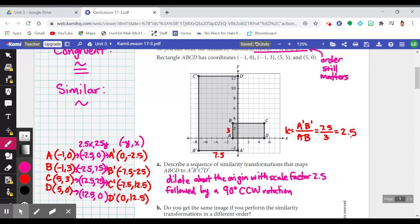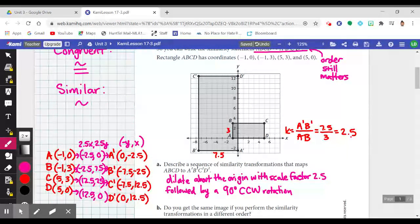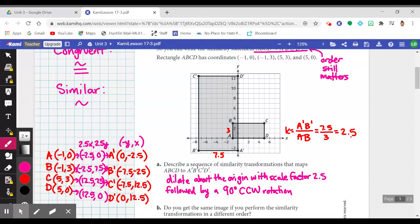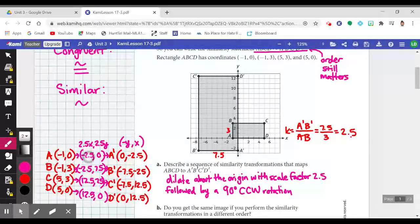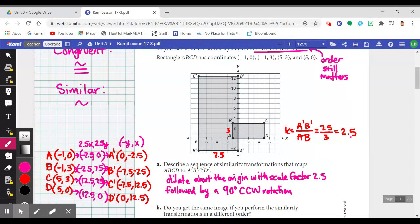The task was to describe a sequence of similarity transformations that maps ABCD to A''B''C''D''. So the first thing hopefully you notice is that there had to be a dilation involved, because A''B''C''D'' is larger in scale to rectangle ABCD. The way to find the scale factor is you take the length of one side of the image and divide it by the length of its corresponding side in the pre-image. So the length from A' to B' was 7.5, and the length from A to B was 3, and that fraction reduces to 2.5.